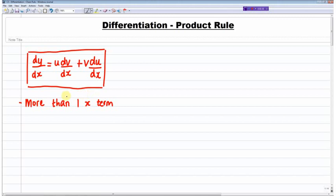Okay, so we use the product rule when there's more than one x term, when they're being multiplied together. I'll try and explain this on the right here.